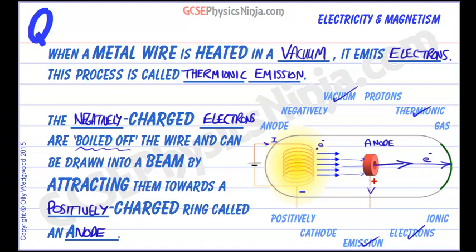Why is thermionic emission useful? Cathode ray tubes such as this are used in the old style of television set. They're also used in sensitive measuring equipment called oscilloscopes, which can measure very small voltages that are changing very rapidly. They're also used to create X-rays — when you bombard a metal with electrons you can create X-rays, which are very useful in hospitals for diagnosing broken bones.